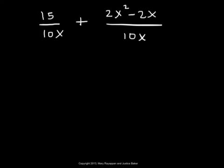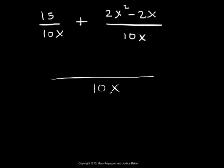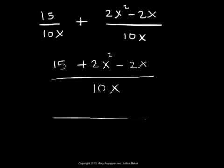The addition problem now translates to 15 over 10x plus 2x squared minus 2x over 10x. Since the denominator is the same, we rewrite this as a single expression with 10x in the denominator and the numerator being 15 plus 2x squared minus 2x. Writing the numerator in proper order gives us 2x squared minus 2x plus 15, divided by 10x.